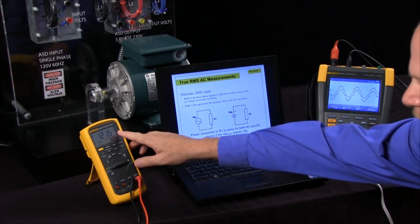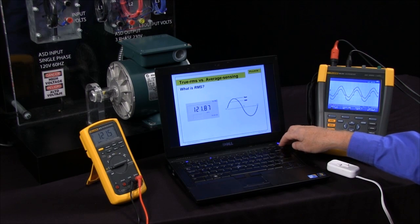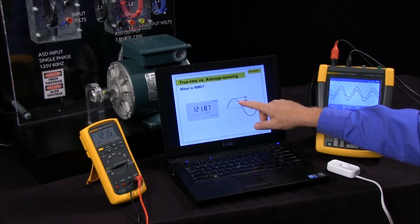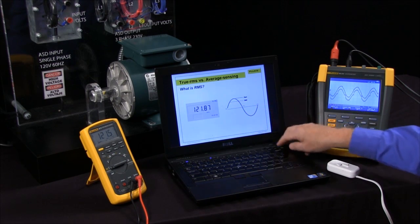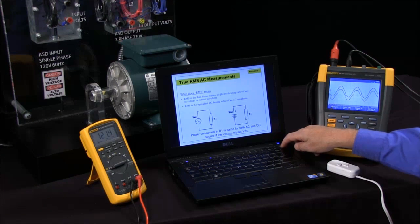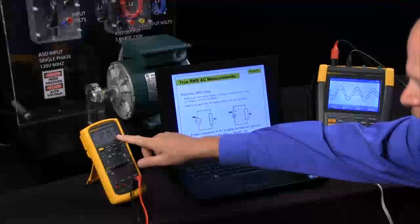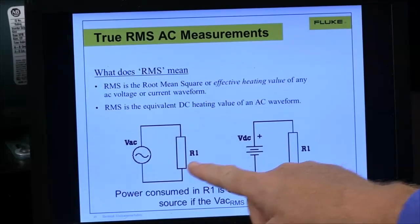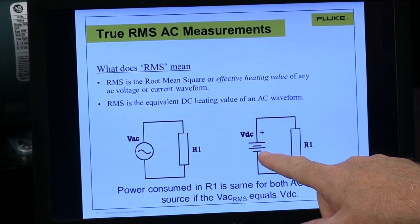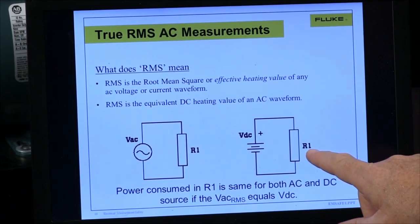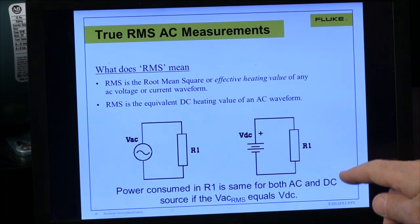When they're taking an RMS measurement, what we're reading is we're actually reading the RMS value of a signal. And what the RMS relates to is if I take a 120 volt AC signal, apply it to a resistor, and then I take a 120 volt DC battery, apply it to the same resistor, it'll heat that resistor to exactly the same temperature.